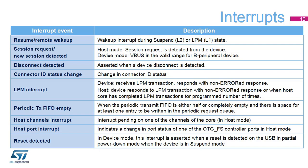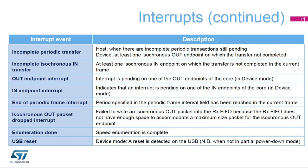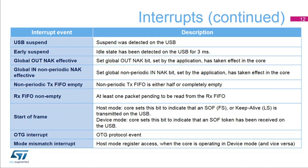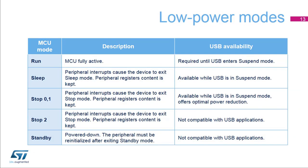Note: in device mode, the reset detected interrupt is asserted when a reset is detected on the USB and partial power down mode when the device is in suspend mode. The following slides describe additional diverse sets of interrupt sources, including suspend events, OTG functions, and FIFO status events, as well as a general register access error.